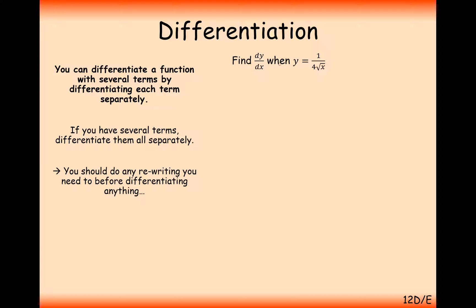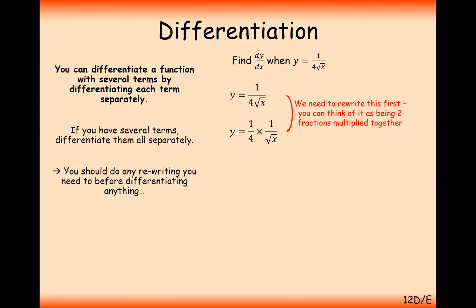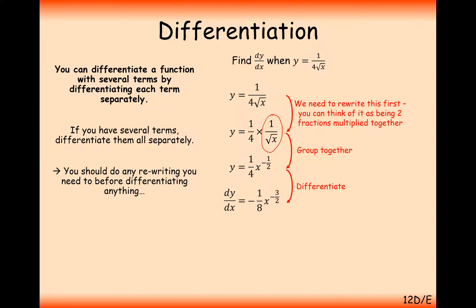A slightly more difficult one: find dy/dx when y equals 1 over 4 root x. Treat this as y equals a quarter times 1 over root x — split up the fraction on the denominators. Convert the power on the x into an index: it's now x to the power of minus one half. The quarter isn't involved in the power, so leave it at the front. Differentiating: a quarter times minus one half gives minus one eighth, and reducing minus one half by 1 gives minus three over two. So dy/dx equals minus one eighth times x to the power of minus three over two.